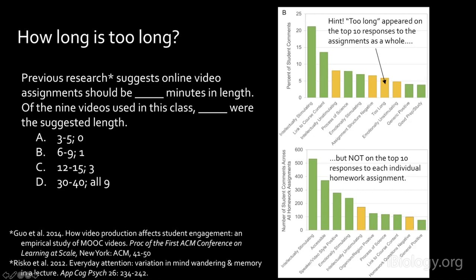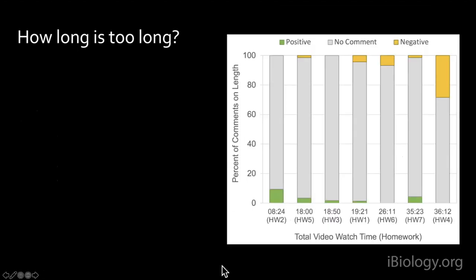Poll results show most folks responded that the recommended length is about 12-15 minutes and that three of my videos fell in that range. The correct answer is that recommendations from these sources recommend no longer than nine or ten minutes, and only one of my videos fell in that length. This initially concerned me. This graph has the x-axis showing total video runtime rather than homework order — our shortest video was homework two, the elephant census at just under eight and a half minutes, and the longest was homework four at over 36 minutes. The vast majority of students didn't state an opinion either way on length.